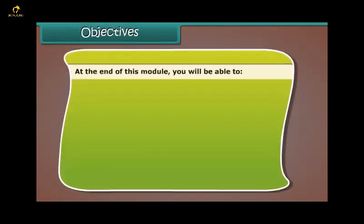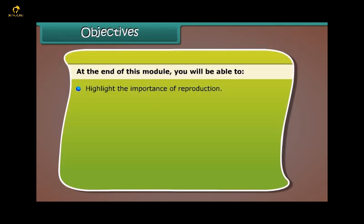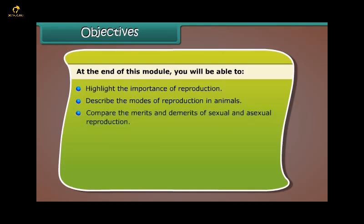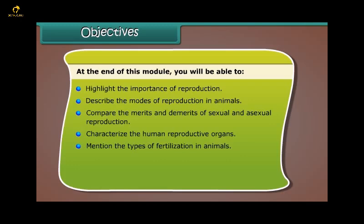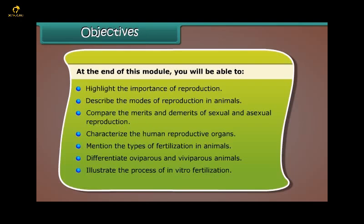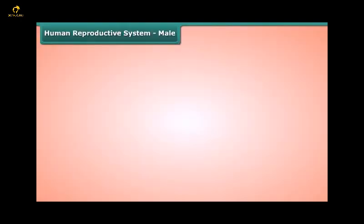Objectives: At the end of this lesson you'll be able to highlight the importance of reproduction, describe the modes of reproduction in animals, compare the merits and demerits of sexual and asexual reproduction, characterize the human reproductive organs, mention the types of fertilization in animals, differentiate oviparous and viviparous animals, and illustrate the process of in vitro fertilization.